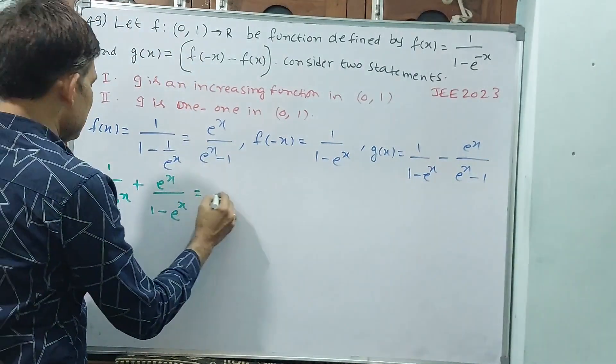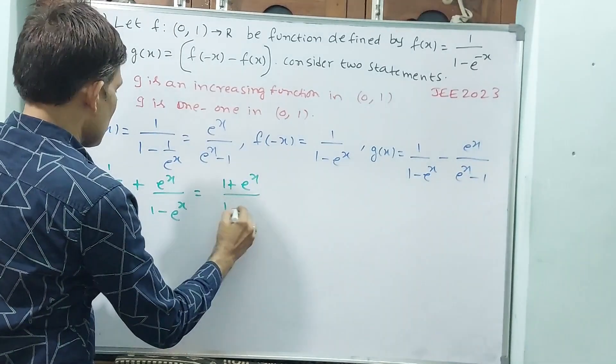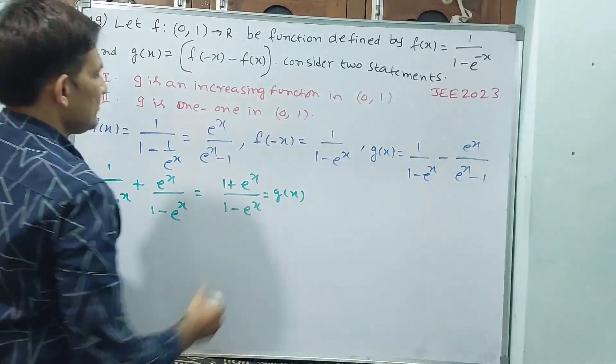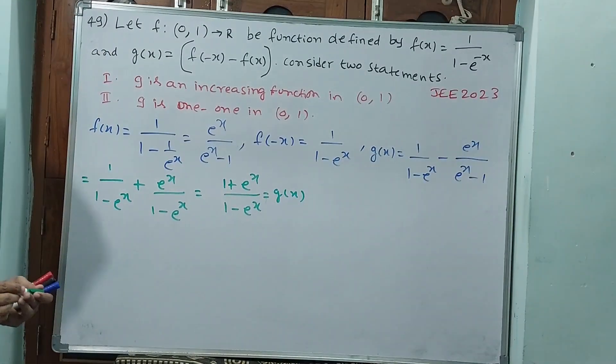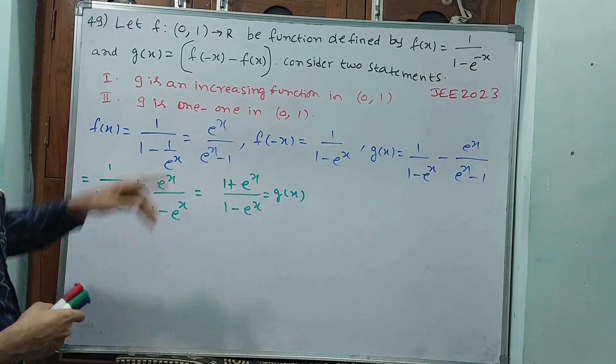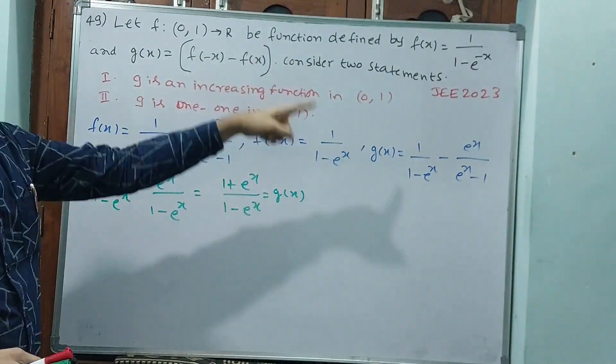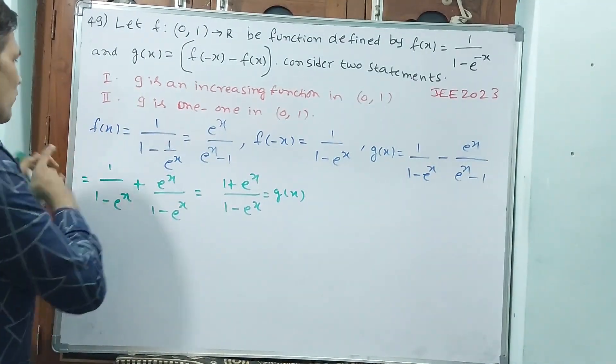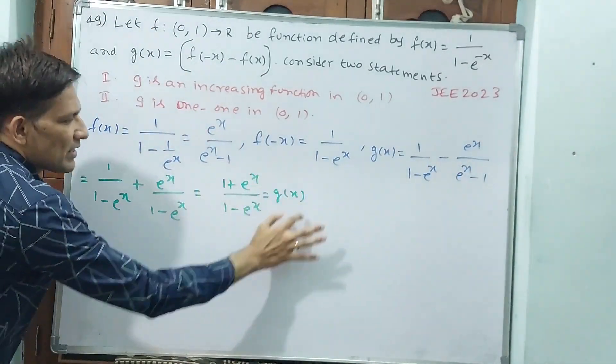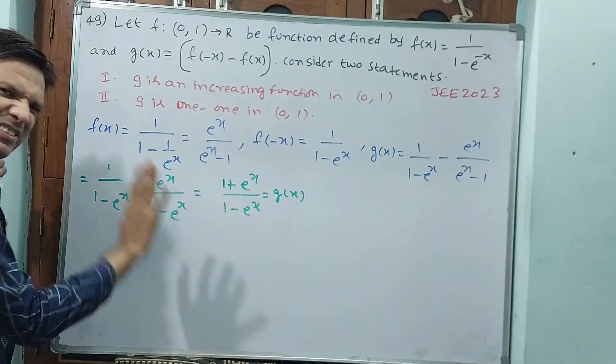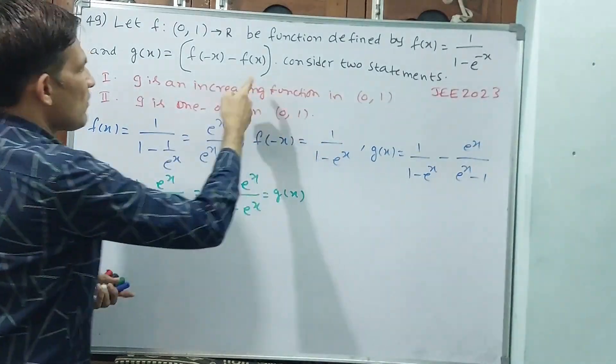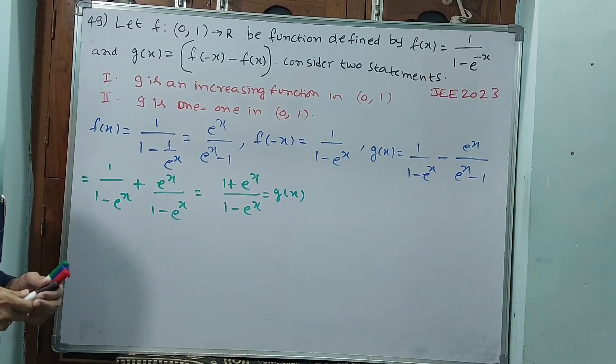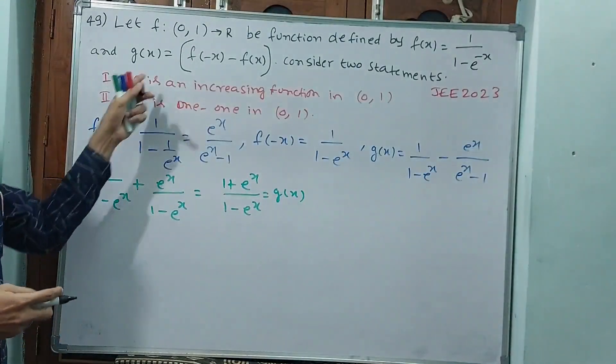Now see, denominator is same. That means (1 + e^x)/(1 - e^x). This is g(x). Now we stop. What they are asking? f they have given, g they have given. Consider two statements. In both statements they are considering only g. That means you forget about f(x) and f(-x). You have to consider only this: (1 + e^x)/(1 - e^x). Whether increasing function or not function.